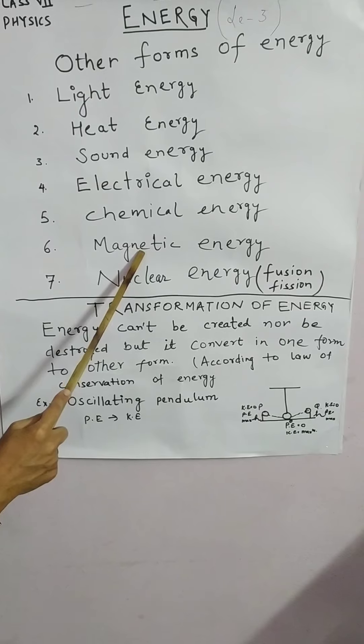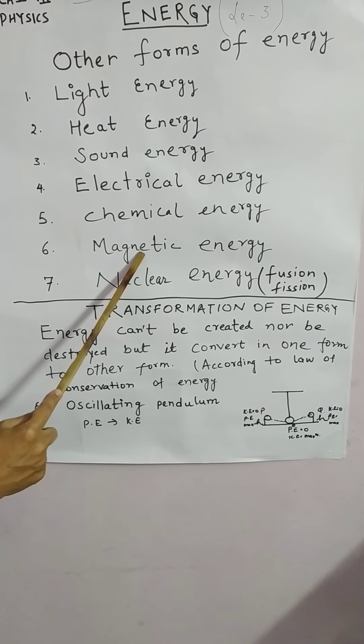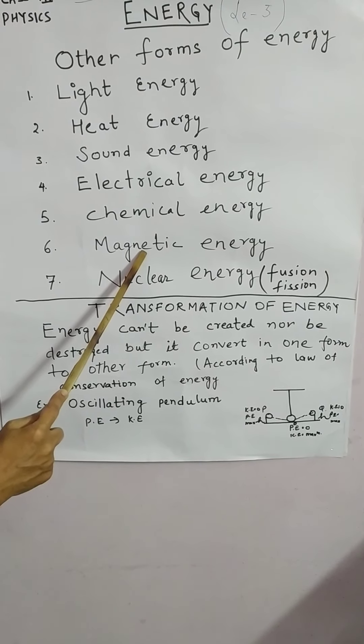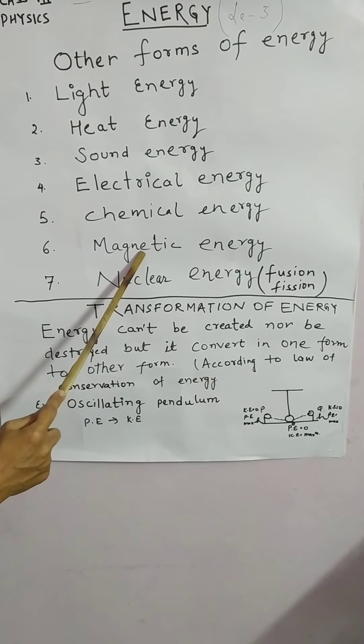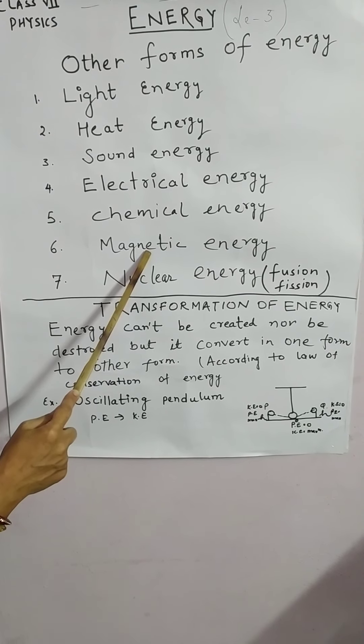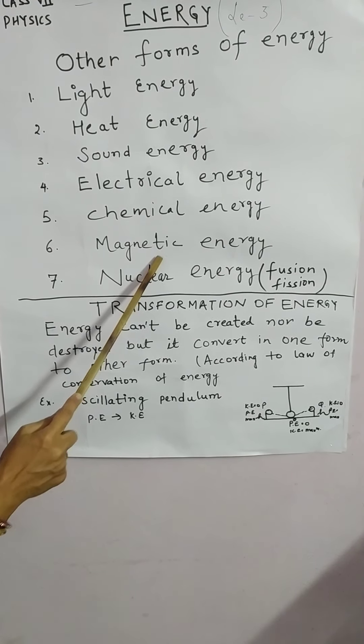Magnetic energy. The energy possessed by a magnet is called magnetic energy. Magnetic energy is used in dynamos, motors, telephones, etc.